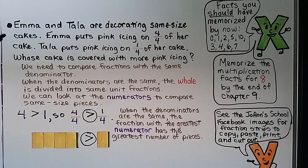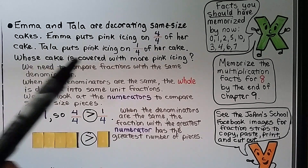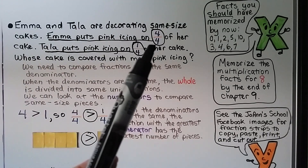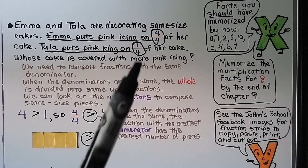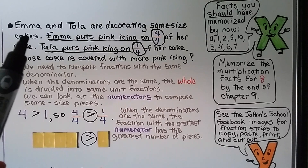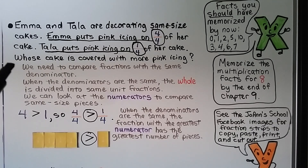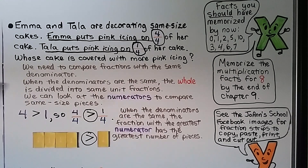Emma and Tala are decorating same-size cakes. Emma puts pink icing on 4 fourths of her cake. Tala puts pink icing on 1 fourth of her cake. Whose cake is covered with more pink icing? It's important that Emma uses 4 fourths and Tala uses 1 fourth, and that they are decorating the same size cakes. When the denominators are the same, the whole is divided into the same unit fractions, and we can look at the numerators to compare same-size pieces.